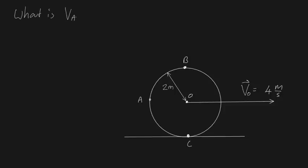We need to find the velocity of A, providing both a magnitude and a direction. To answer this, first I'm going to assume this is a case of pure rolling — there's not going to be any slipping of this wheel as it rolls. It's going to be stuck to the ground, which means it's also going to be rotating at an angular velocity of omega.